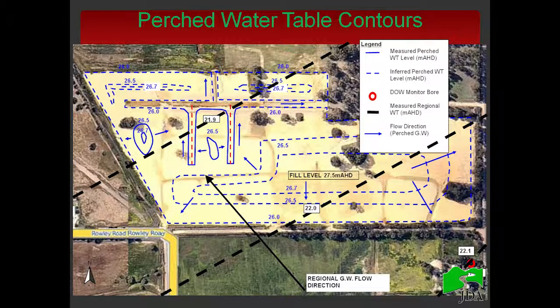The regional groundwater table is marked with a black dashed line. It goes from 22 meters AHD to 21, so this is the gradient — it's flowing north-west. The reading from our bore shows a maximum mounding level of 26.5. It is very easy to notice that the regional groundwater table is several meters below the recorded water level in the trial site, and this proves that there is indeed a perched water table there.